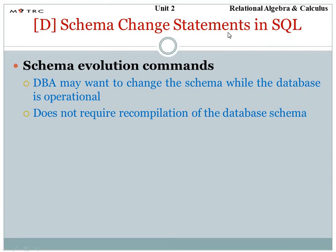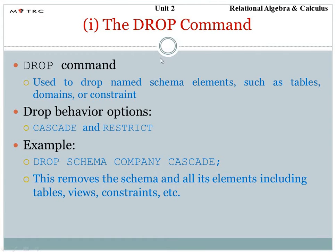Our next topic is the change of schema. If we have to change the schema that we've already made, the DBA — the database administrator — has the right to change it. First we have the drop command, which is used to remove a schema element such as a table, domain, or constraint. The behavior of drop should be cascading. For example, drop schema from company cascade, which drops the company schema and removes all elements — tables, views, constraints — cascading. The restrict option drops only some portions.